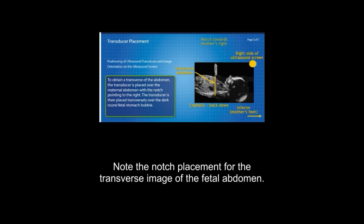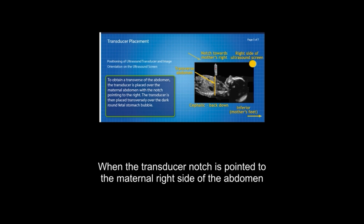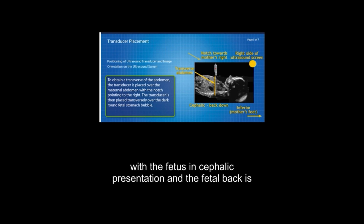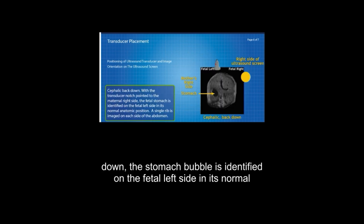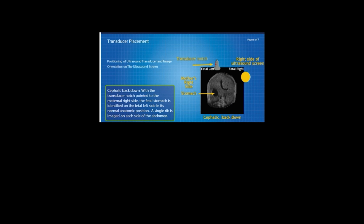In this clip, note the notch placement for the transverse image of the fetal abdomen. When the transducer notch is pointed to the maternal right side of the abdomen with the fetus in cephalic presentation and the fetal back is down, the stomach bubble is identified on the fetal left side in its normal anatomic position.